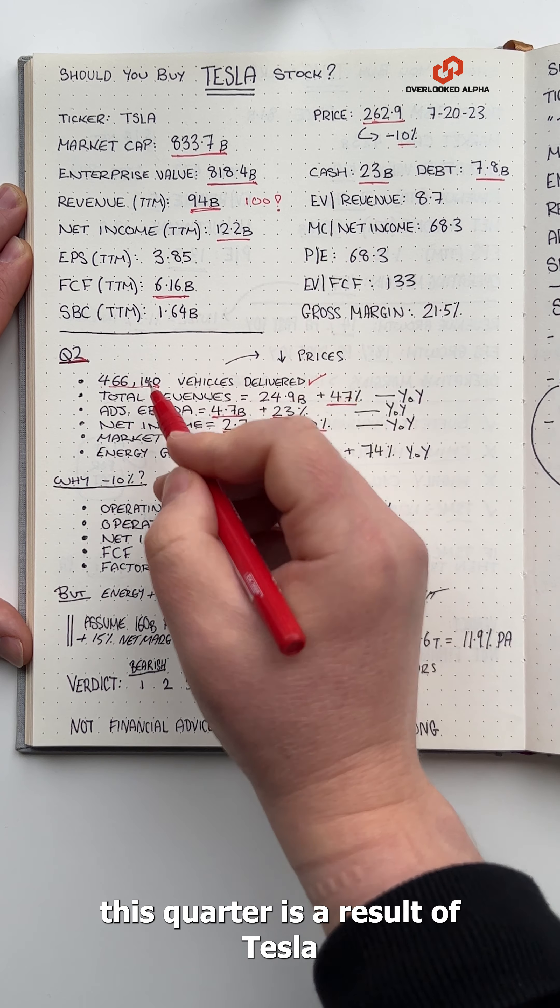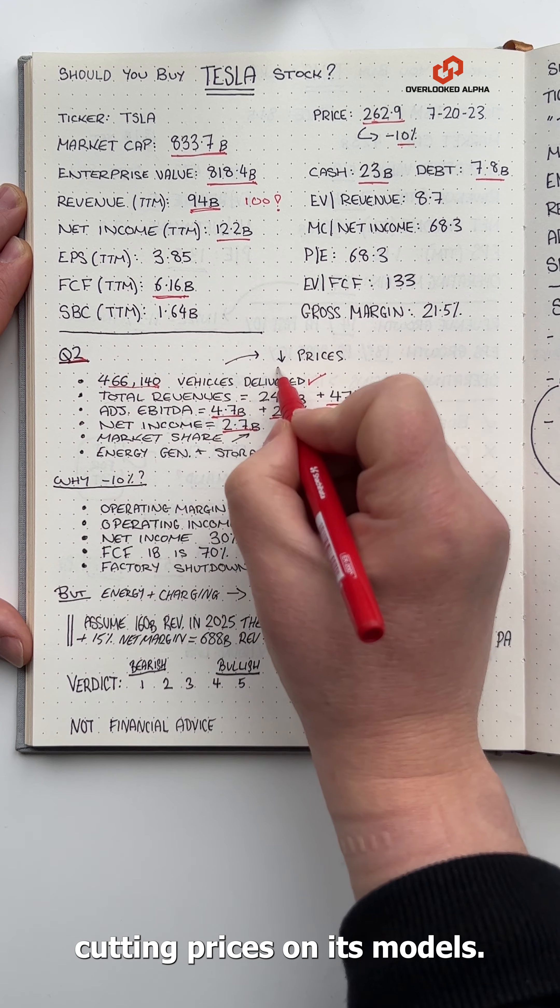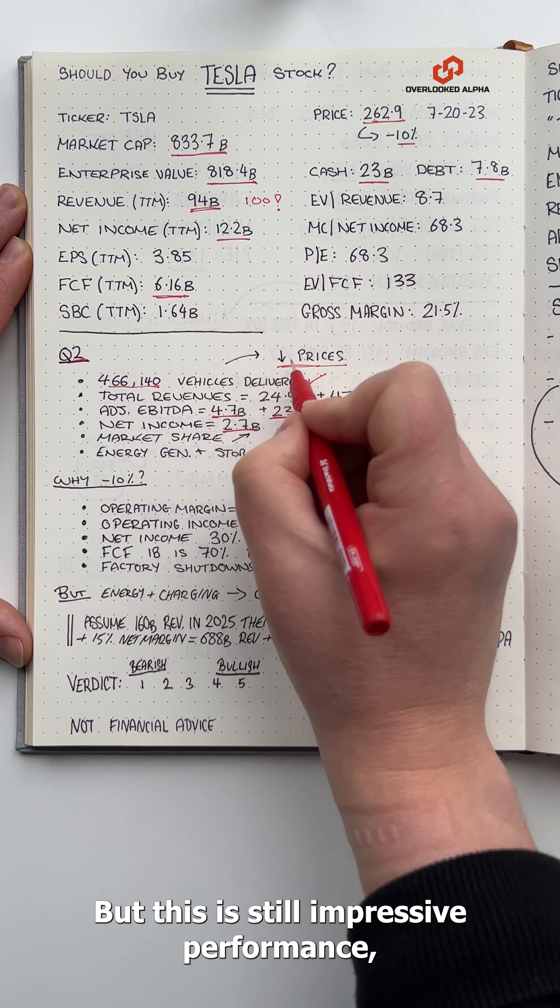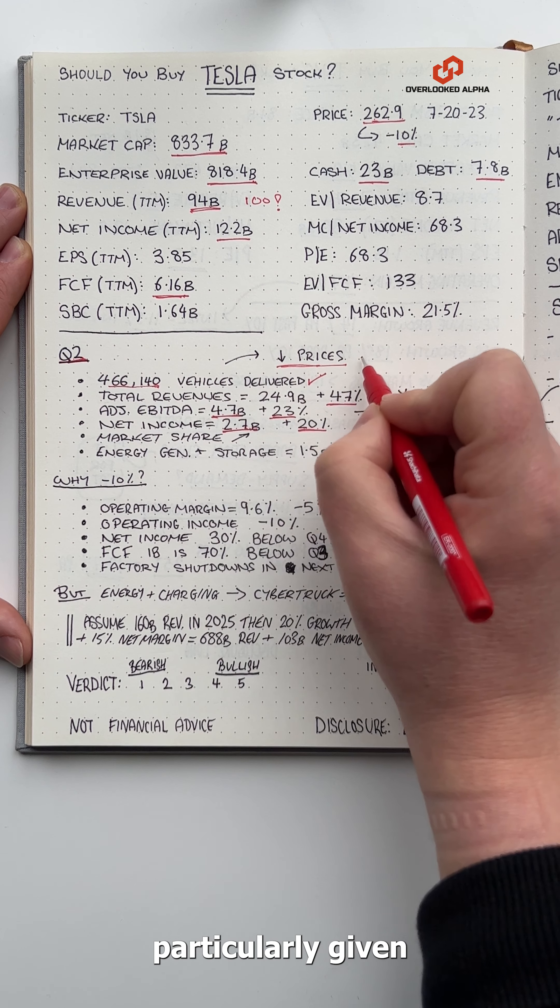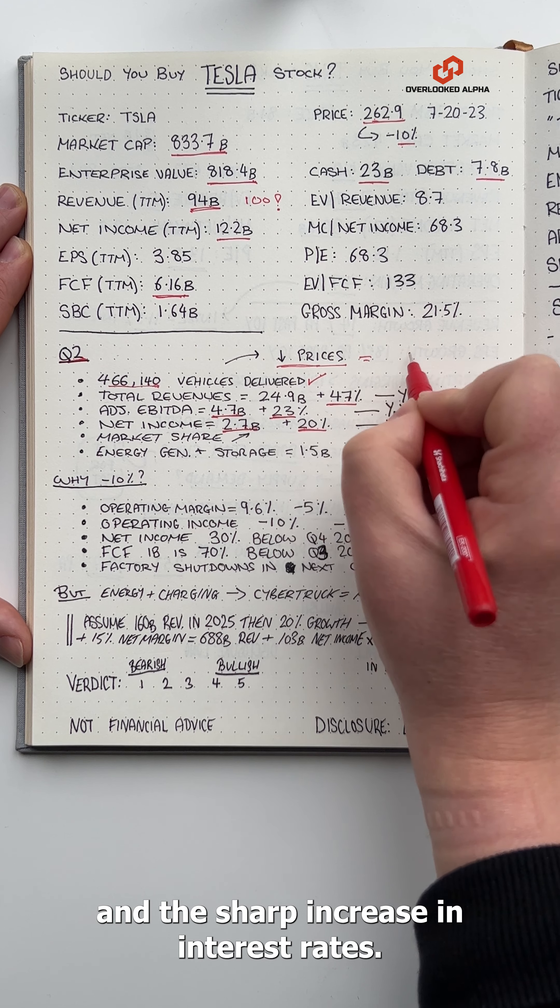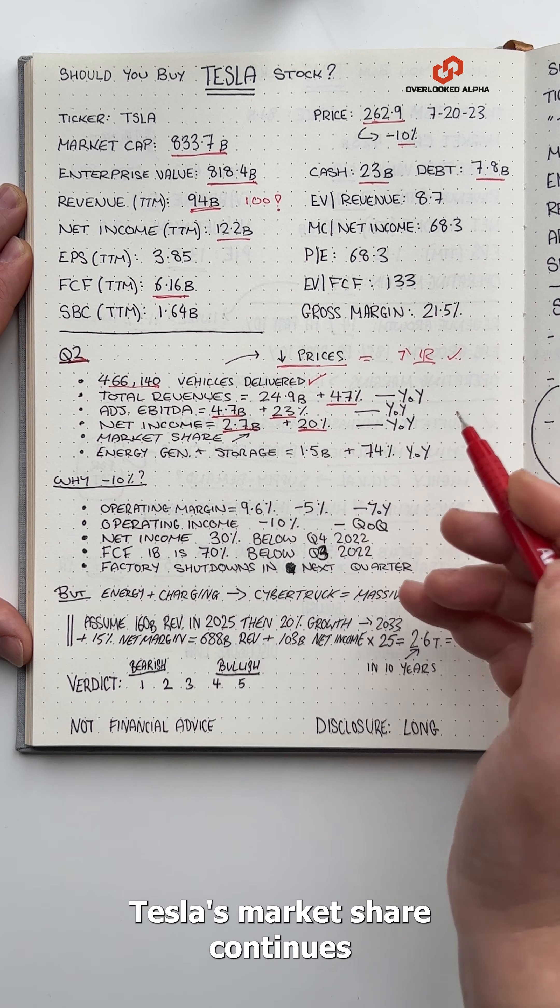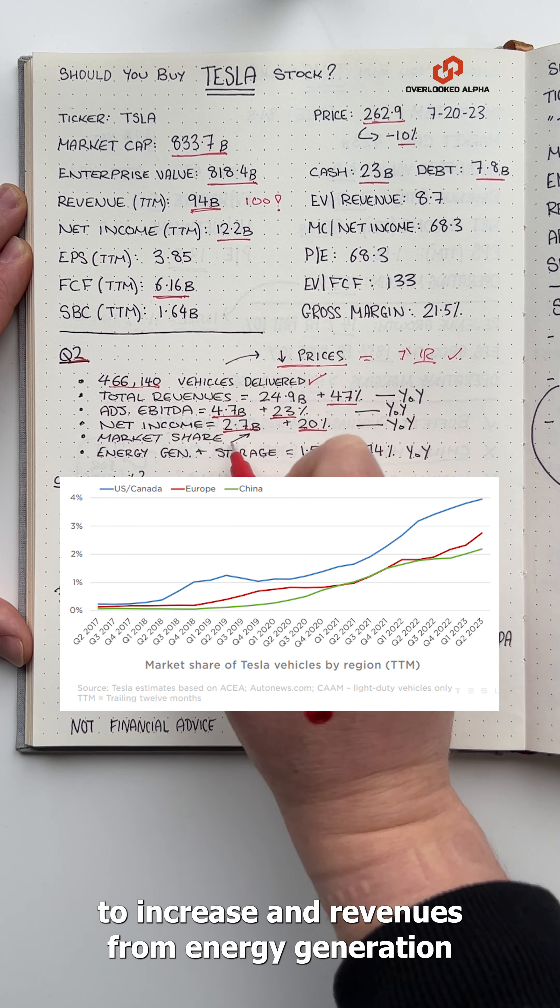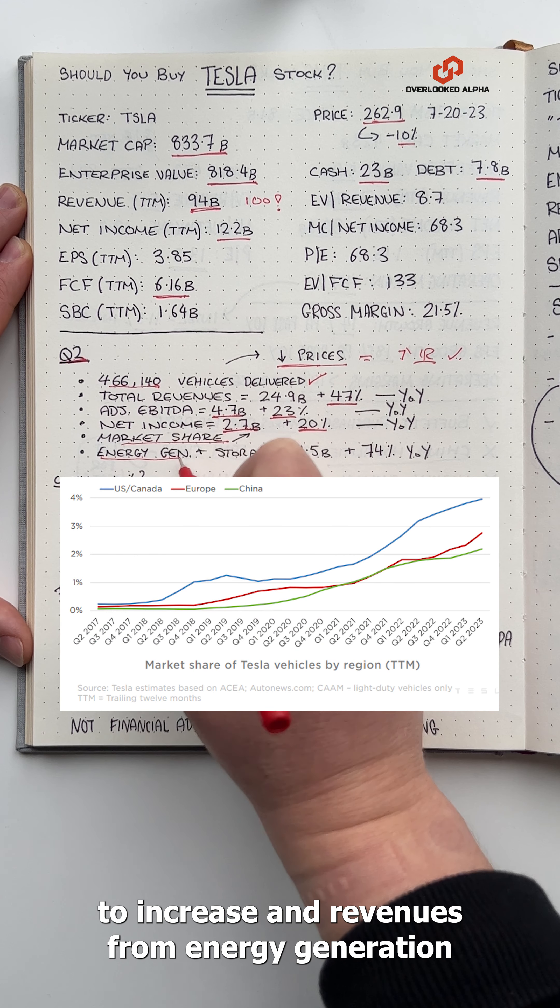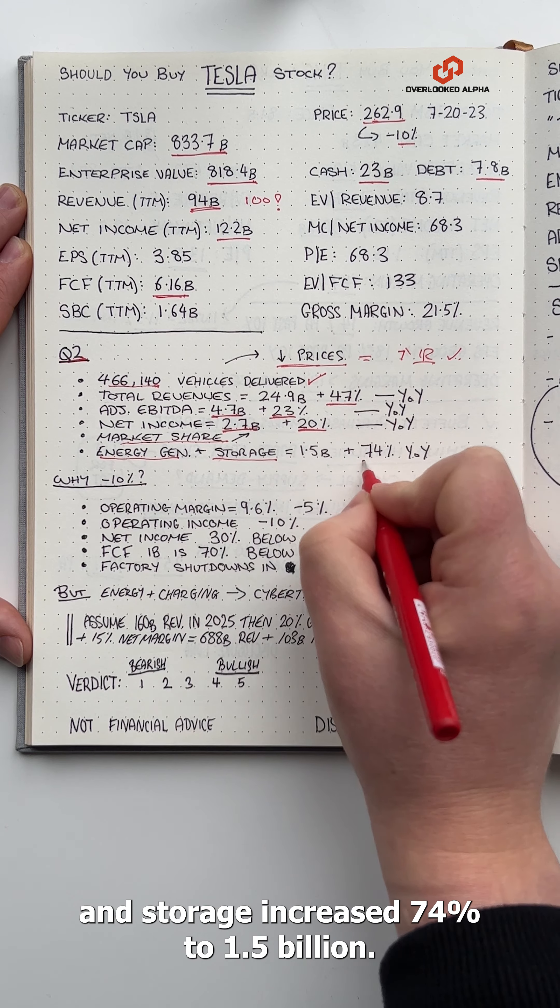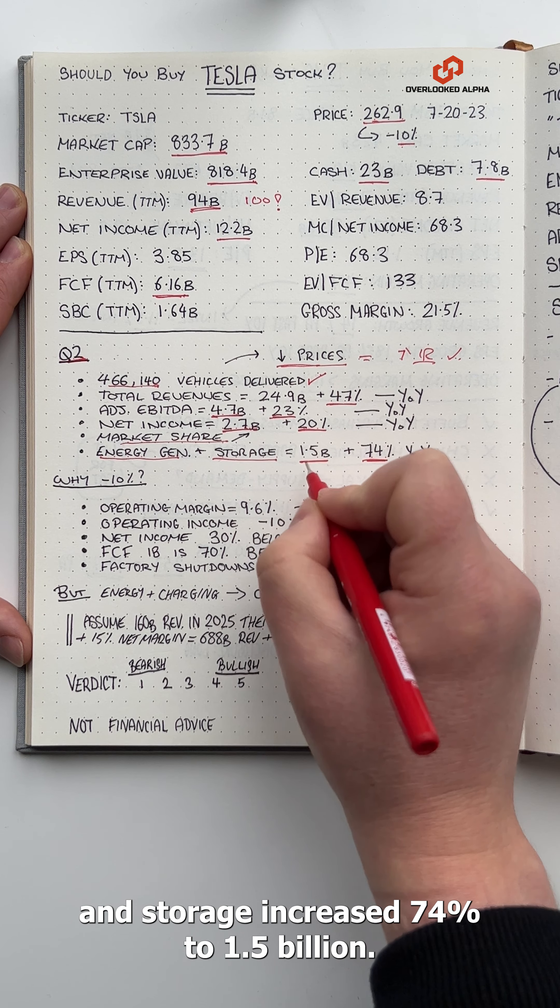Part of the growth this quarter is a result of Tesla cutting prices on its models, but this is still impressive performance, particularly given the difficult market conditions and the sharp increase in interest rates. And there were other bright spots too. Tesla's market share continues to increase and revenues from energy generation and storage increased 74% to $1.5 billion.